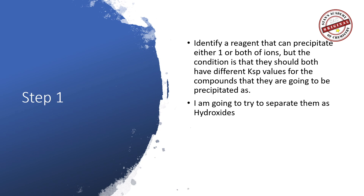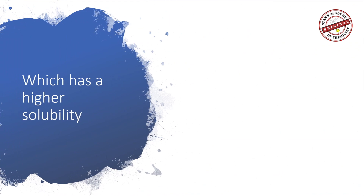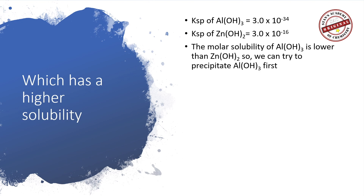I am going to try to separate them as hydroxides. Aluminum hydroxide and zinc hydroxide can easily form. The KSP of aluminum hydroxide is 3.0 × 10⁻³⁴, and the KSP of zinc hydroxide is 3 × 10⁻¹⁶. Aluminum hydroxide has a much smaller KSP than zinc hydroxide, meaning the molar solubility of aluminum hydroxide is lower than that of zinc hydroxide.